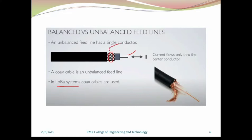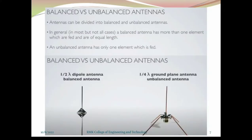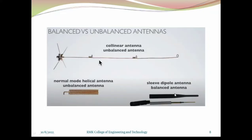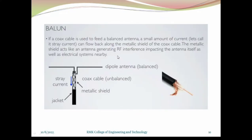Now we will discuss, if we connect a coaxial cable to any other antenna system, how we can connect them together, whether it needs a balanced or unbalanced system. These are examples of some balanced and unbalanced antenna systems. The half-wave dipole antenna is a balanced antenna. The helical antenna is unbalanced, the sleeve dipole is balanced, and the collinear antenna is an unbalanced antenna system.